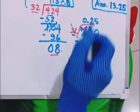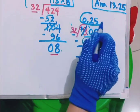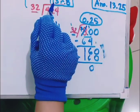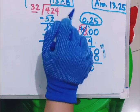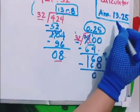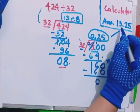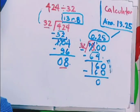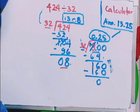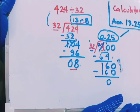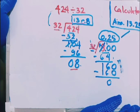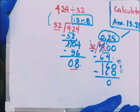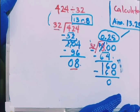160 minus 160 will give you zero. So this is point 25, and this is your answer from before: 13 remainder 8. The 8, now you convert the 8 to point 25, and you will come out with 13.25, the same as the calculator. I hope you learned something from this video. Please follow for more videos. Thank you for watching.